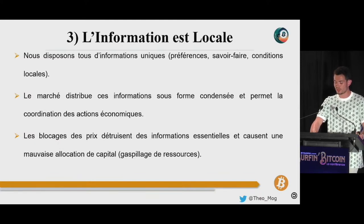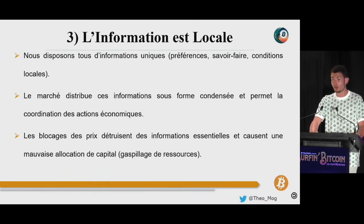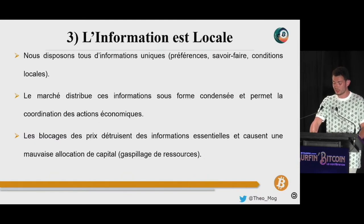Bref, ce dont j'essaie de vous convaincre depuis quelques minutes, c'est que le secret de l'avancement de la civilisation réside dans l'acte qui consiste à reporter une gratification immédiate pour immobiliser des ressources productives qui nous permettront de générer des surplus dans le futur. Et cela ne peut se faire que si deux conditions sont remplies : premièrement, que nos préférences temporelles baissent ; et deuxièmement, que nous disposions de prix de marché libre pour nous guider dans l'allocation de nos ressources. Or, ces deux prérequis sont eux-mêmes en premier lieu dépendants du fait que nous disposions d'une technologie monétaire qui soit une bonne réserve de valeur et qui résiste à la manipulation.